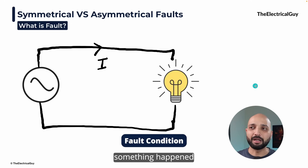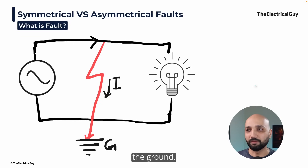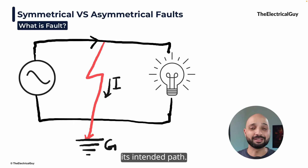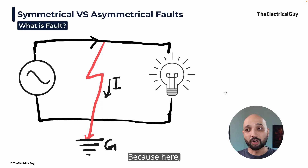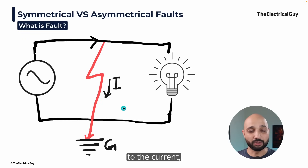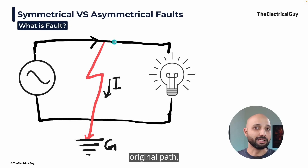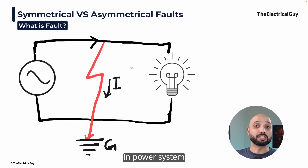For example, let's say something happened and one of the phase wires is now touching the ground. As a result, this connection is created and the current will start flowing through this path and not from its intended path. Why? Because this newly created path is offering less opposition to the current — less impedance. And since the impedance offered by this path is much lower than the original path, the amount of current that flows through this will be very, very high. In power systems, it can go to several thousand amperes.